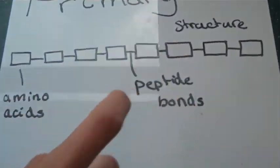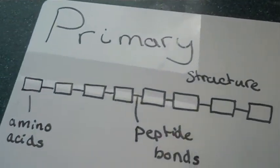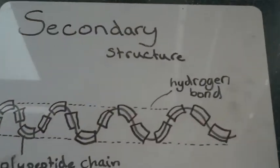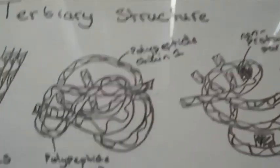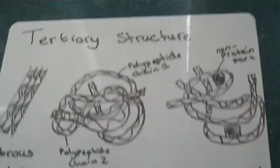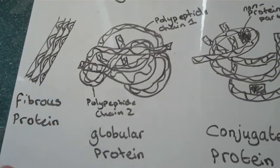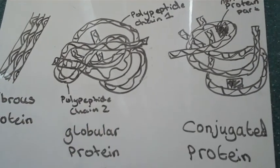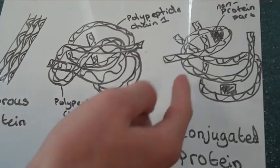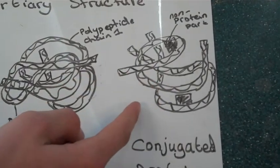There are three different types of structure: Primary, Secondary, and Tertiary. There's also fibrous protein, globular, and conjugate.